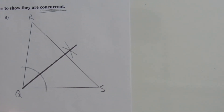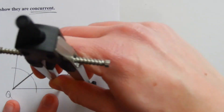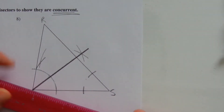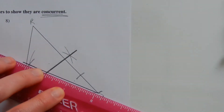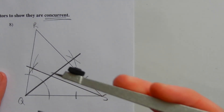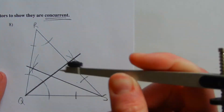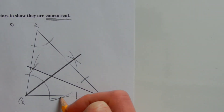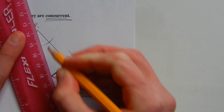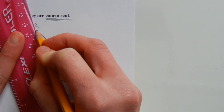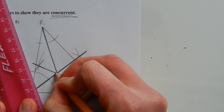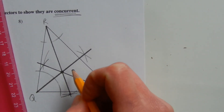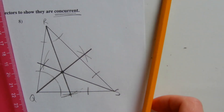Now forming the angle bisector of S — the intersection point is found and connected to vertex S. Lastly, for the angle bisector of R, making marks from the intersection points I find the point lying on that angle bisector and connect it to vertex R. You can see all three lines intersect and are therefore concurrent. The incenter is the intersection of the angle bisectors, and that point is the point of concurrency.